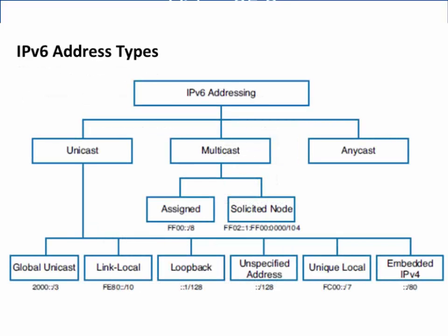Looking at this diagram, we can see the various types of IPv6 addresses: unicast, multicast, and anycast. Under unicast addresses, we see global unicast, which are publicly routable; link-local, used only on the local link; the loopback address; an unspecified address; unique local, used for private networks; and embedded IPv4 addresses, in which an IPv4 address is embedded within an IPv6 address. Under multicast addresses, we have assigned multicast addresses and solicited node addresses, which are used in DAD, or duplicate address detection.